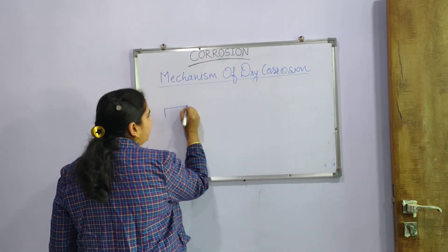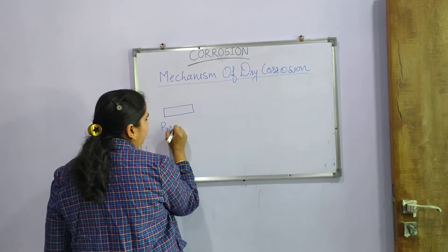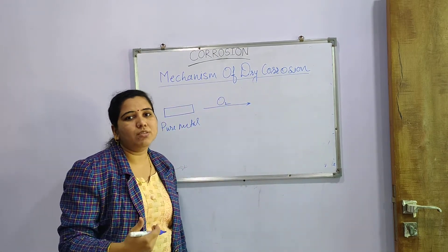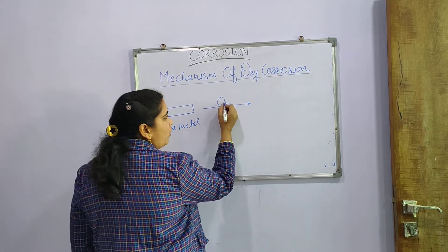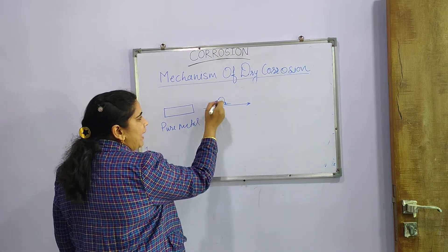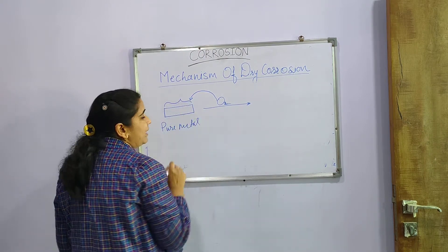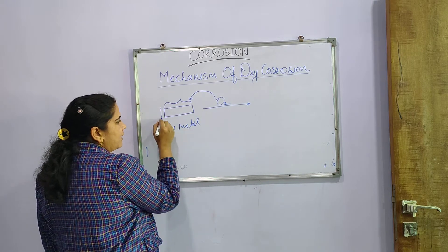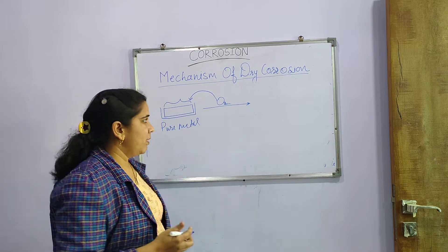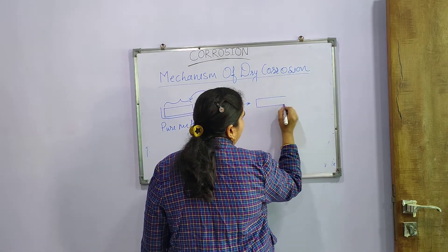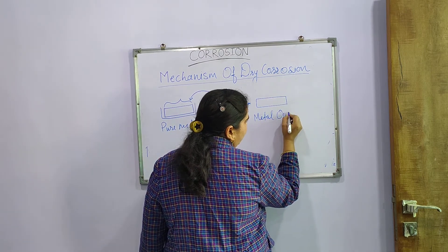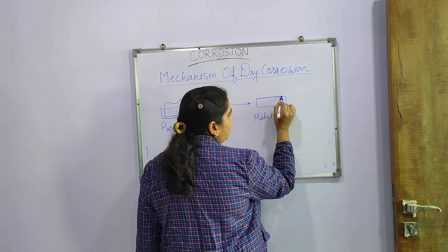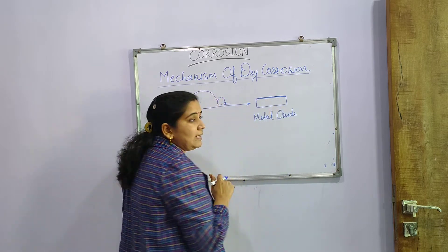Consider a strip of metal. This pure metal is in contact with atmospheric oxygen, because we are dealing with dry corrosion due to oxygen. When O₂ attacks this metal, particularly the portion exposed to the surroundings reacts, while other parts not in contact with oxygen do not react. The product formed is metal oxide, and on the exposed portion there is formation of a thin layer — a film of oxide — which is the product of corrosion.